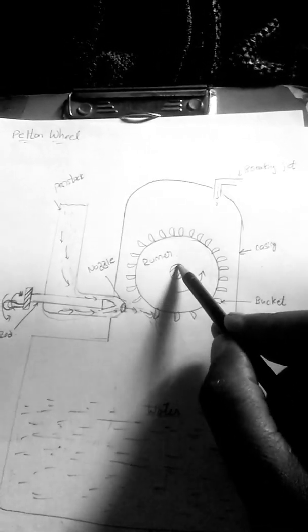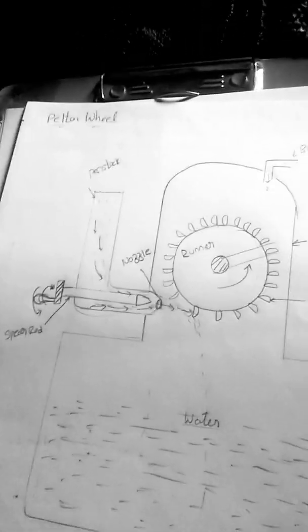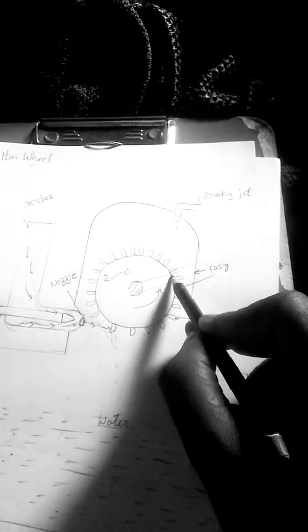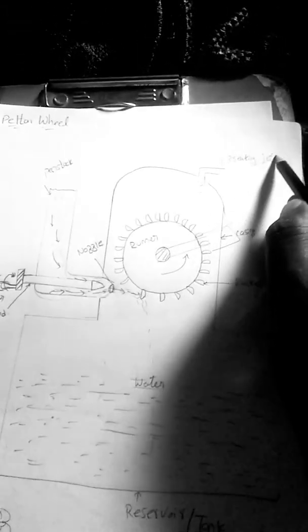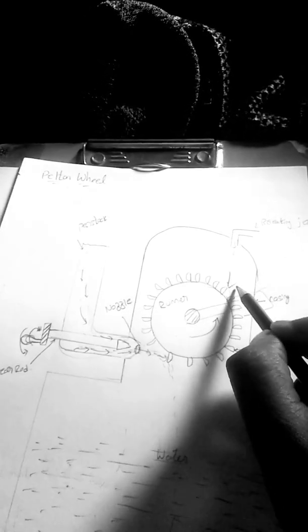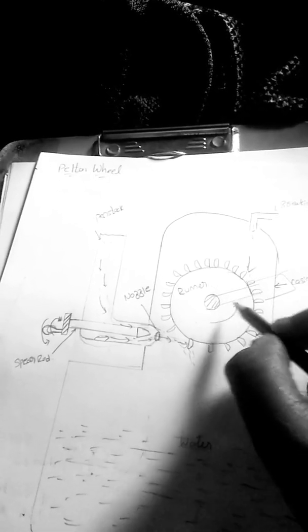The shaft is connected to the motor, also called a generator, and by this motor we produce electricity. The water is collected at the tank at the bottom end. We are providing another component, the braking jet, by sending some water at the top, which stops the rotation of the runner.